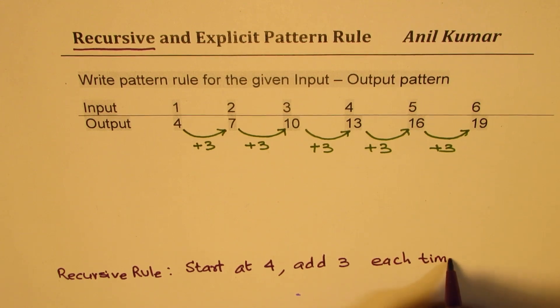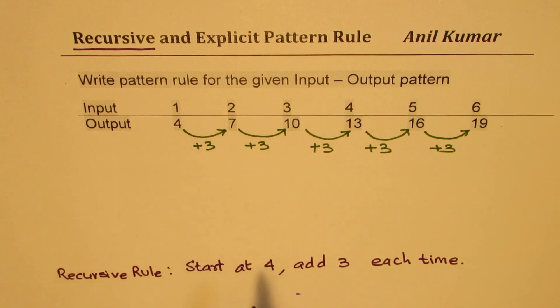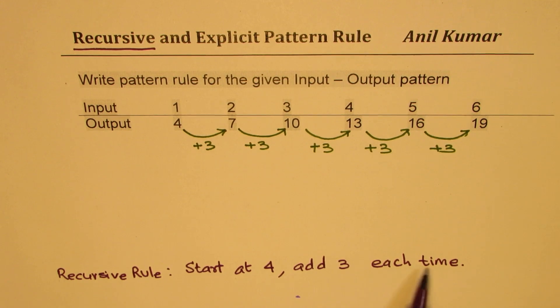Now this is also a pattern rule. We call it recursive rule since we are getting the next number from the previous number. So it's a repeated operation, adding 3 each time. So that is being repeated. So that kind of a rule is called recursive rule.